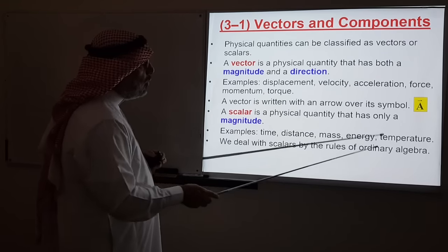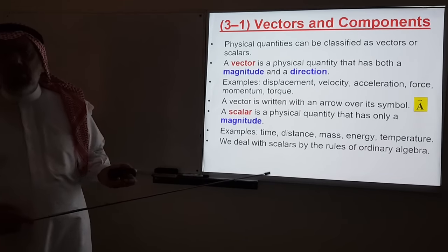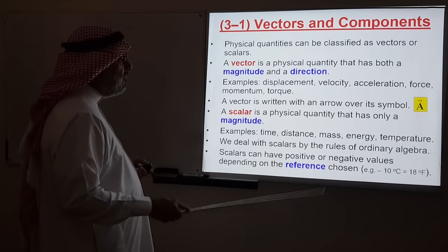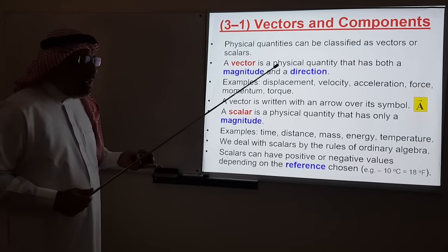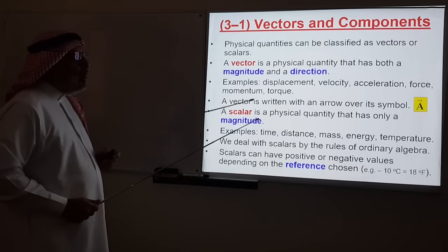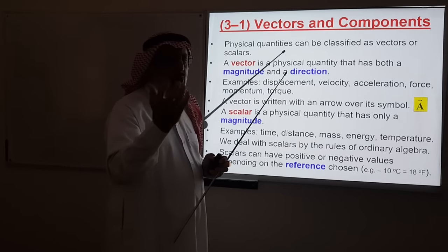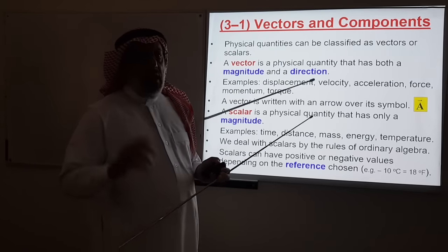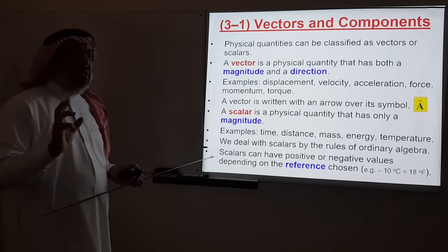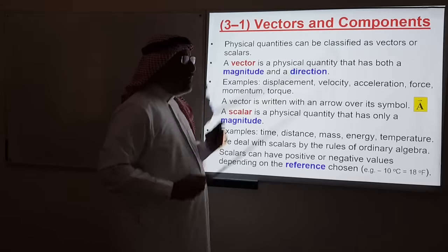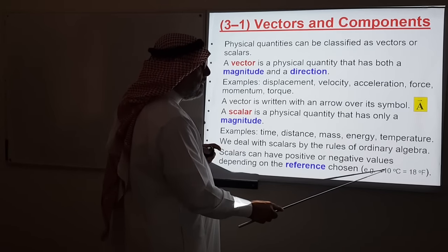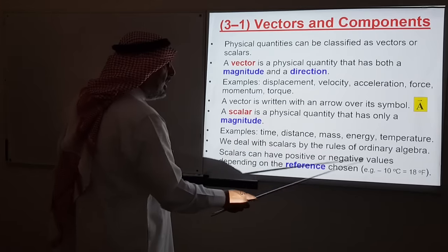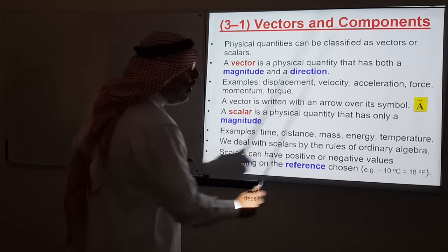We deal with scalars by the rules of ordinary algebra — we treat them like numbers: add, subtract, multiply them just like ordinary numbers. Scalars can have positive or negative values, not because they have directions, but depending on the reference chosen. For example, going inside a refrigerator with a thermometer calibrated in degrees Celsius gives minus 10°C, while the same refrigerator measured in Fahrenheit gives 18°F. The plus or minus is not because temperature is a vector, but because of the scale used.